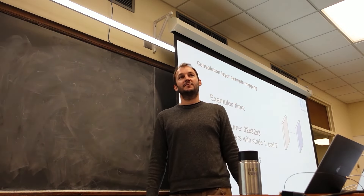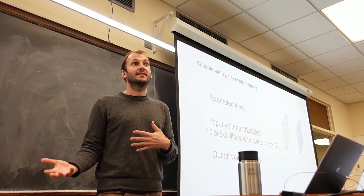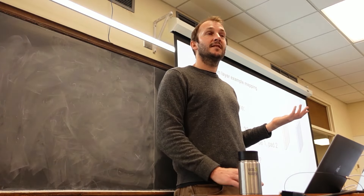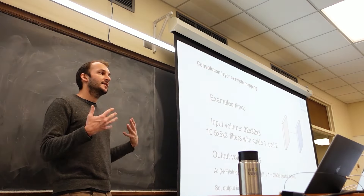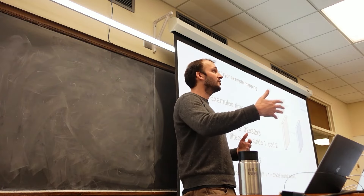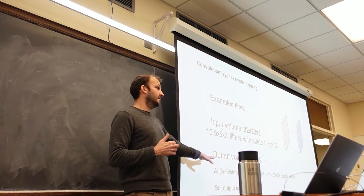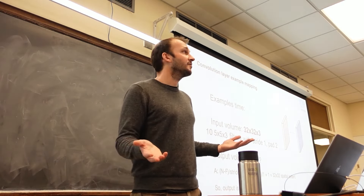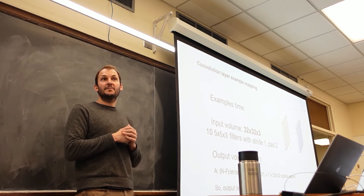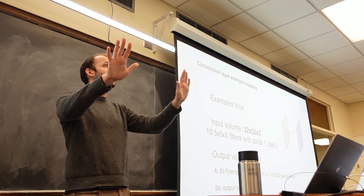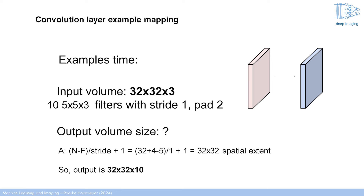When you account for padding, the input volume becomes 36×36×3. Doing N minus F divided by stride plus 1 gives 36 minus 5 plus 1, which is 32. This is useful to highlight: if you want to maintain the size of your image as you go along in TensorFlow — sometimes a goal for segmentation networks — you can pad. TensorFlow defaults to starting the convolution in the upper left and ending at the right, so it'll keep making your image smaller unless you add zeros around the edge.